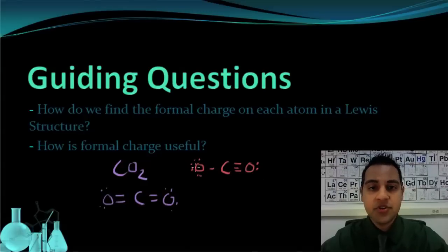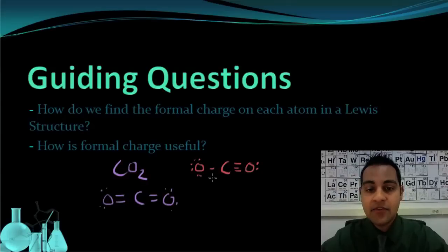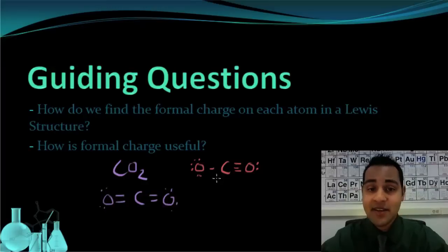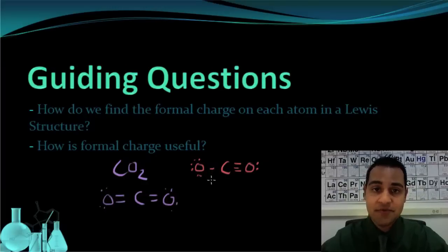This Lewis structure for carbon dioxide works as far as the octet rule is concerned. Every atom in this molecule has eight valence electrons, just like the original Lewis structure. So if they're both valid by the octet rule, which one is going to be the actual structure?